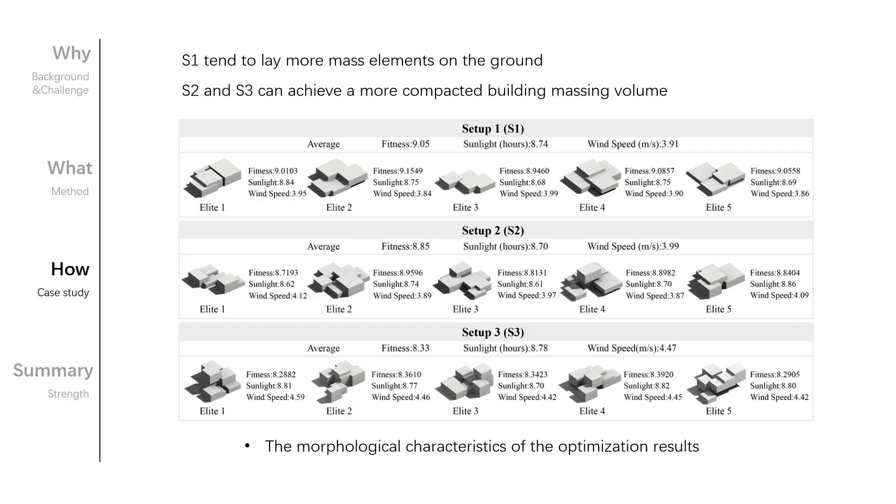To analyze the results of the case study, we use the elite design variants in each of the subpopulations as the results of the conducted optimization processes. And we can see that S1 tends to lay more mass elements on the ground. S2 and S3 can achieve a more compact building massing volume.